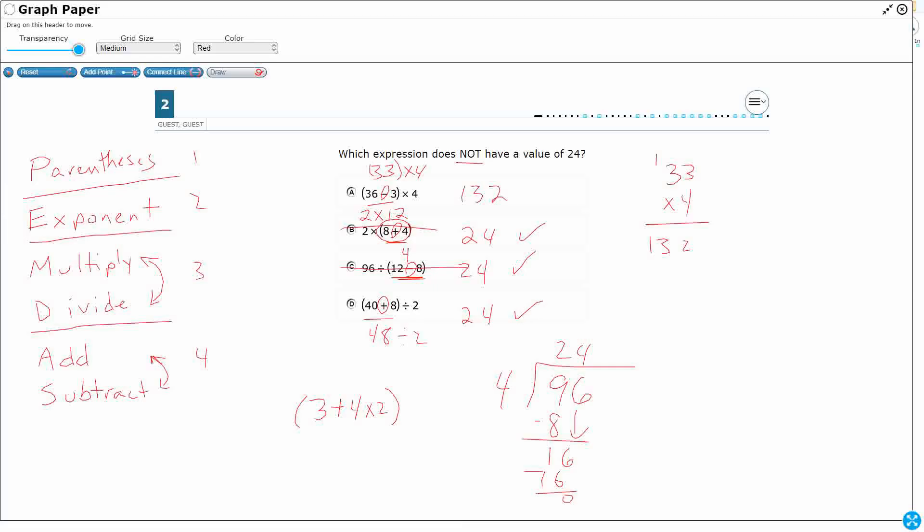OK. So you notice how B, C, and D all equal 24. That's what I don't want. See, here's the tricky thing here, right? So obviously we multiply before we subtract.